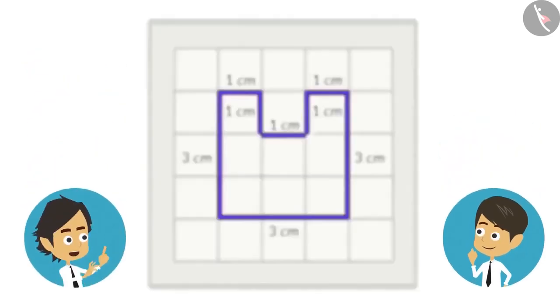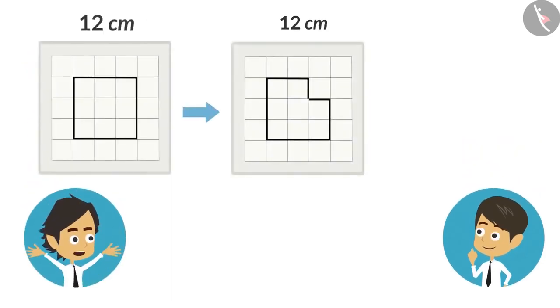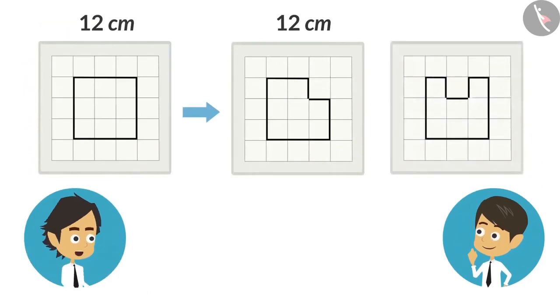When you change the shape, the length of the boundary did not change! But when I change the shape, the length of the boundary changed.